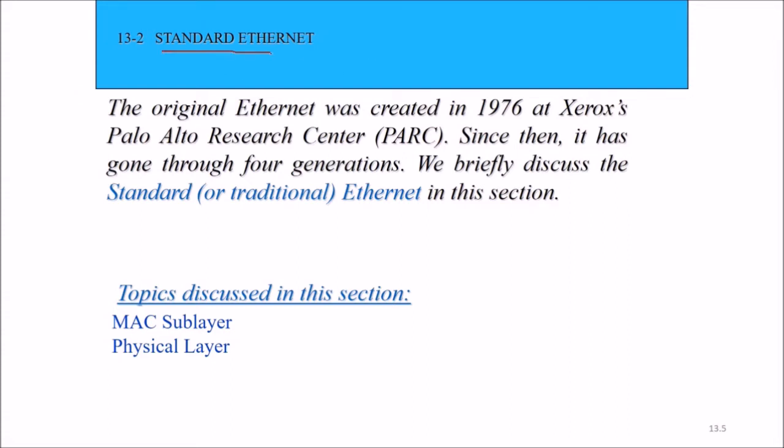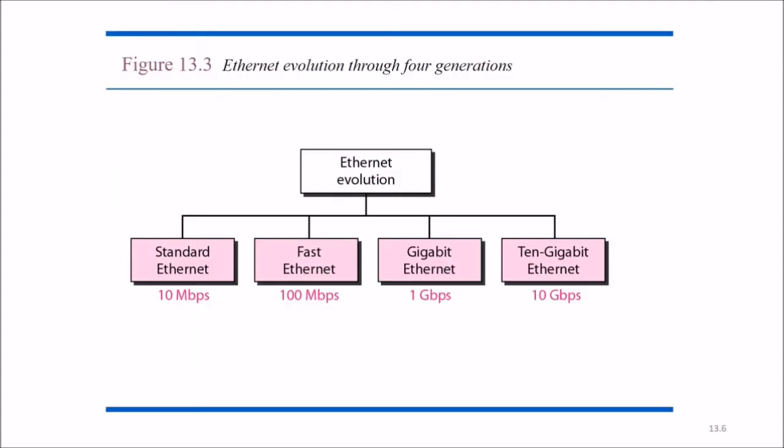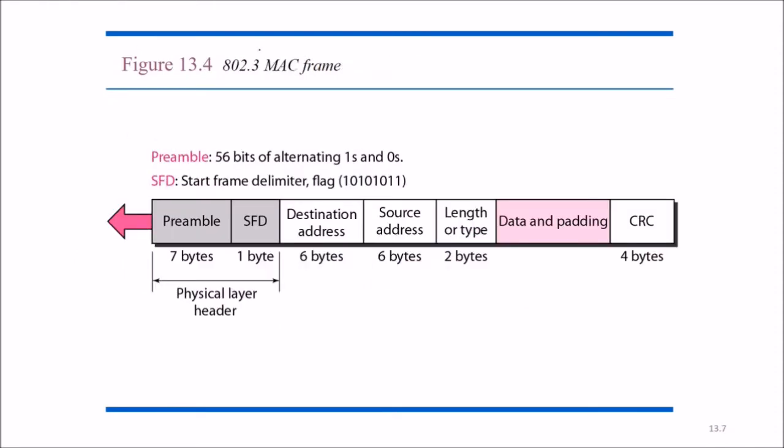The original Ethernet was created in 1976 at Xerox Palo Alto Research Center. Since then, it has gone through four generations. Ethernet evolution among the four generations: it started with standard Ethernet around 10 Mbps speed, then fast Ethernet 100 Mbps, then gigabit Ethernet 1 Gbps, and then 10 gigabit Ethernet, 10 Gbps.